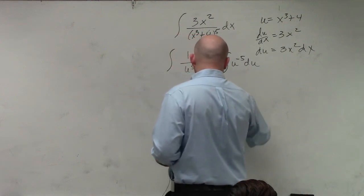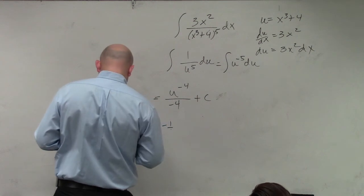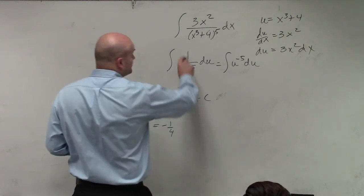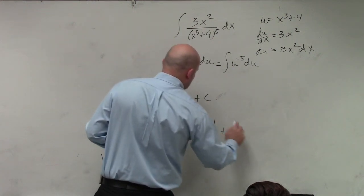which is the same thing as negative 1 fourth. Let's see, how did I write that? OK. Negative 1 fourth times u, which is x cubed plus 4 to the negative fourth plus c.